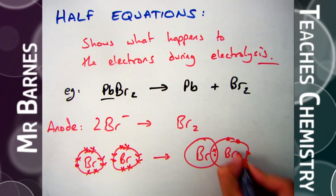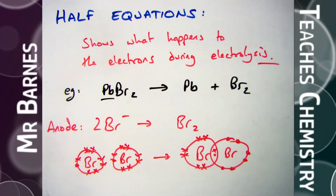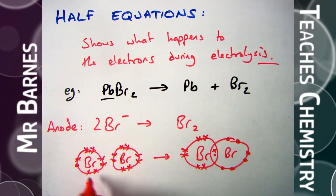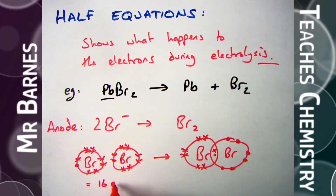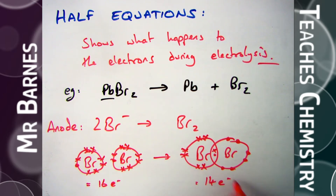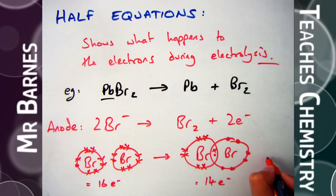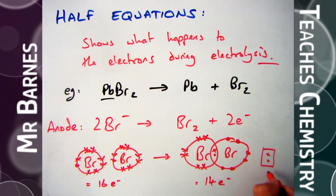Looking at the covalent bonding, bromine has two shells with one shared pair of electrons, both with seven electrons each — the shared pair giving eight, so they have a full outer shell. On the left-hand side I have two ions with full outer shells, so that's 16 electrons. On the right I have 14. I've taken away two electrons, so I put them on the right-hand side of the arrow.